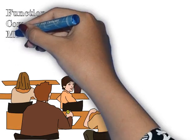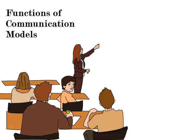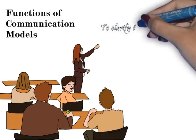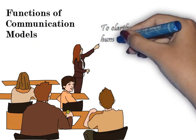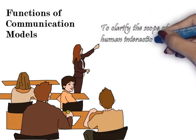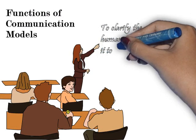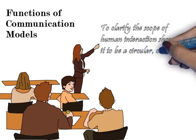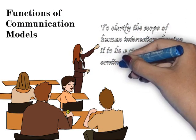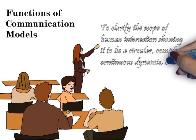For us to have a better understanding, let's talk about the different functions of a communication model. The first one is that it clarifies the scope of human interaction.